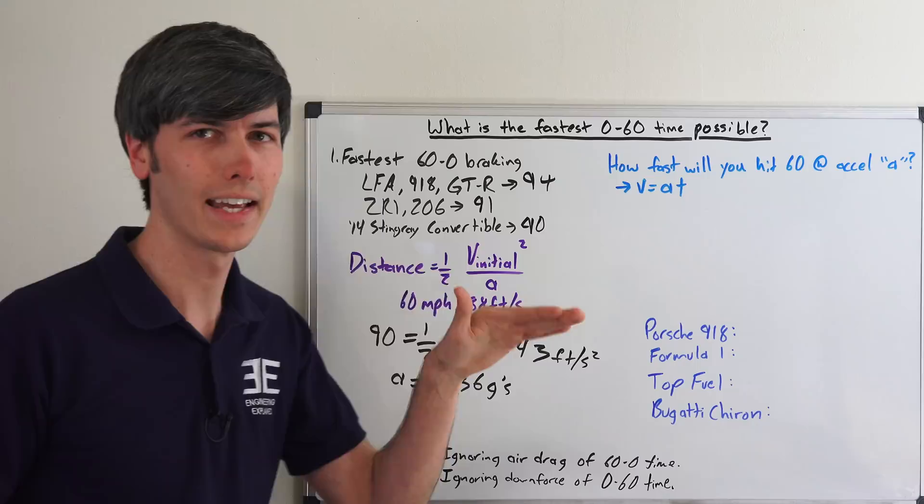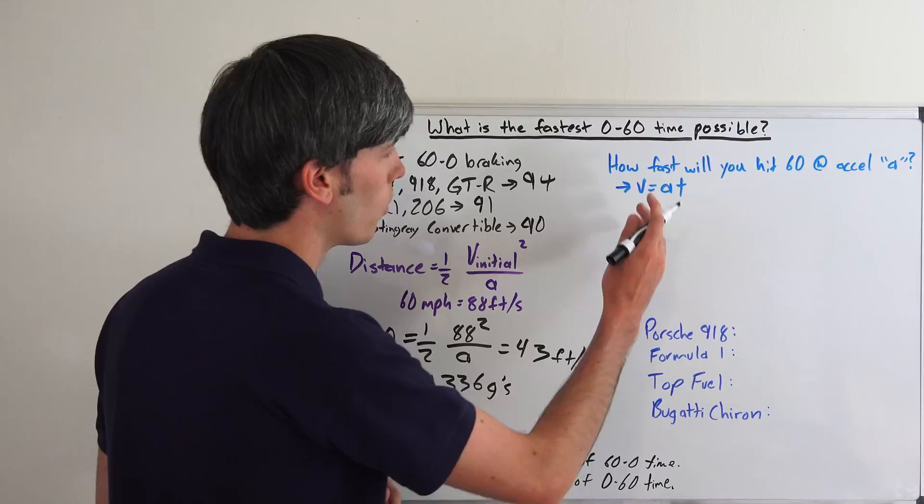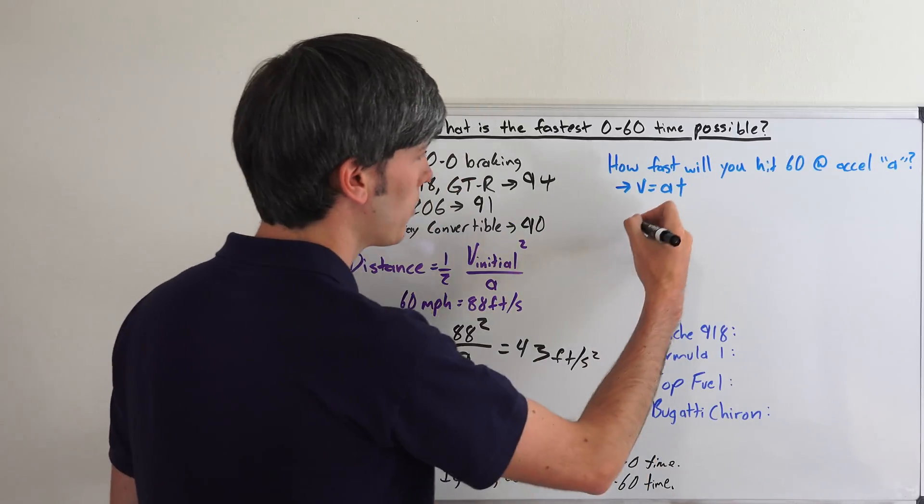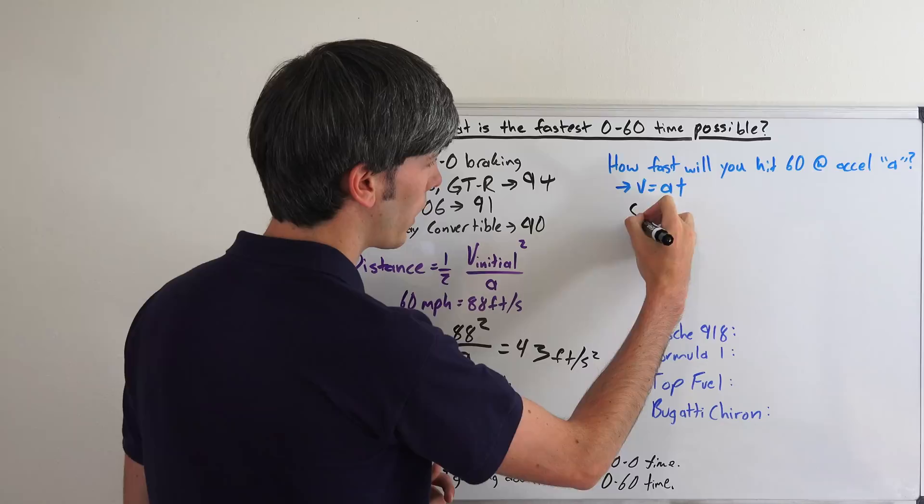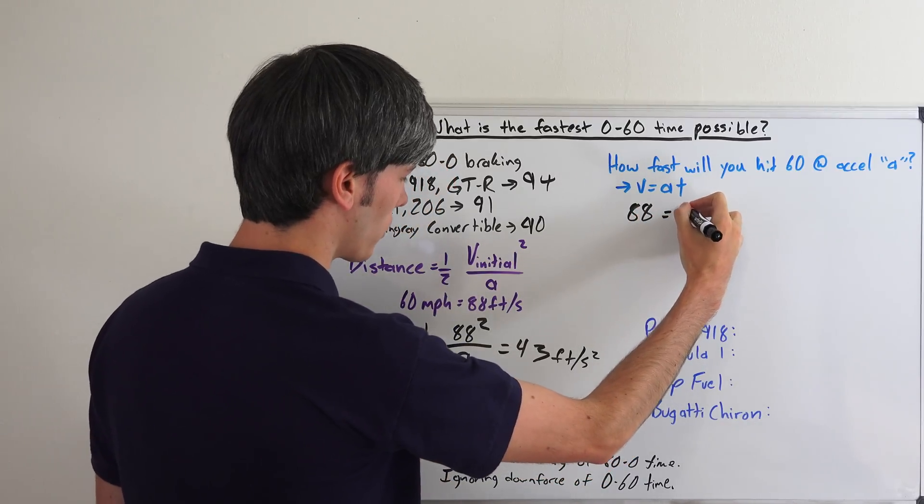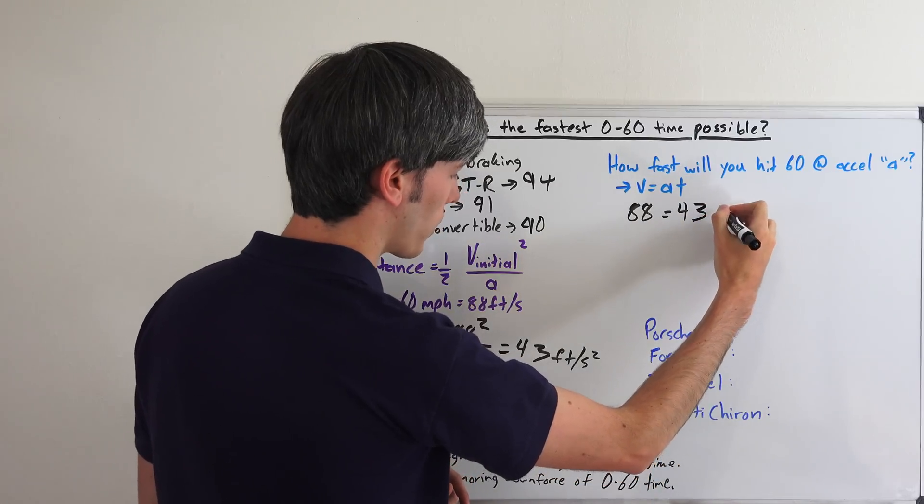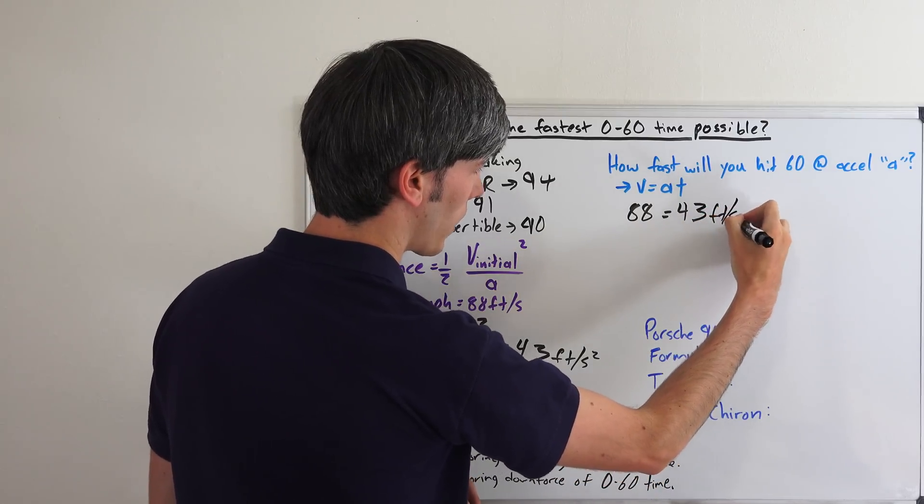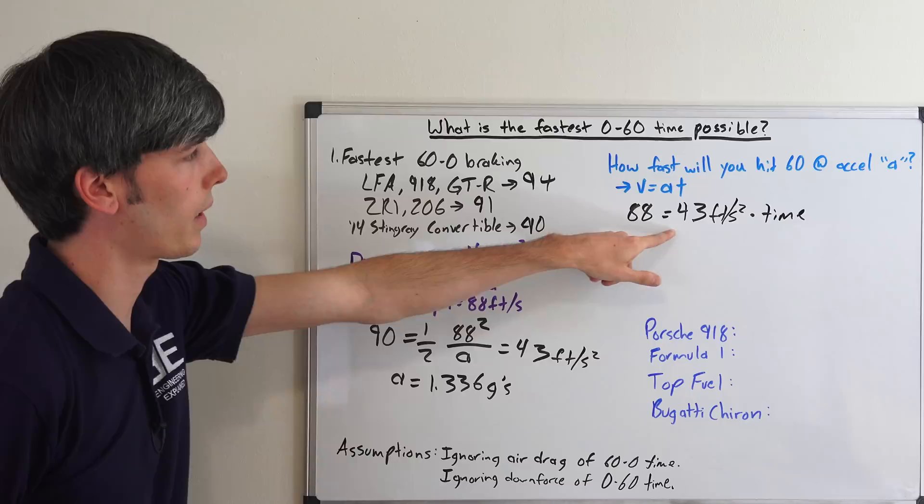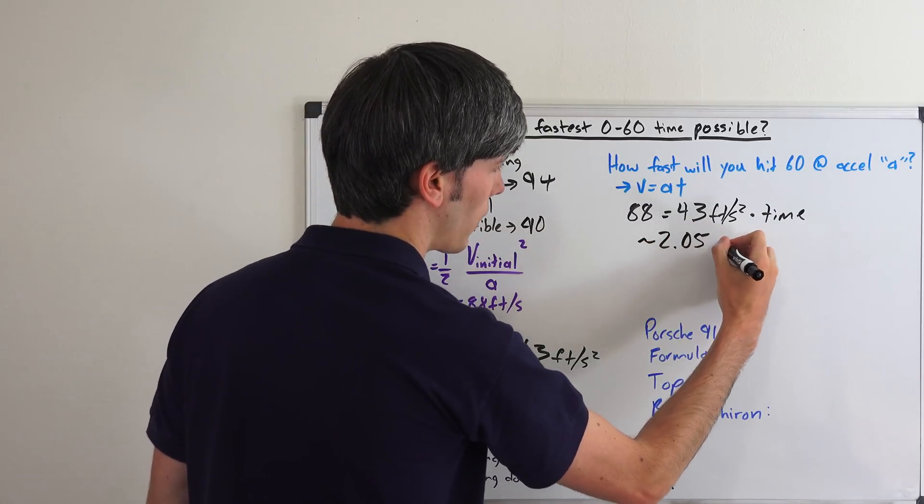So, how fast can we hit 60 miles per hour if we're accelerating at 1.336 g's? Well, here's our equation. Velocity equals acceleration times time. We know that we want to hit 60 miles an hour, or 88 feet per second. Set that equal to our acceleration. We're going to use that 43 feet per second squared. We're going to multiply that by time. And so, we divide 88 by 43, and that gives us about 2.05 seconds.